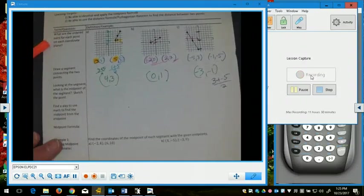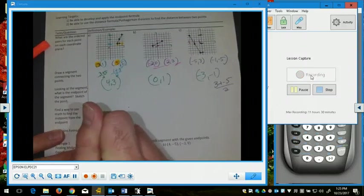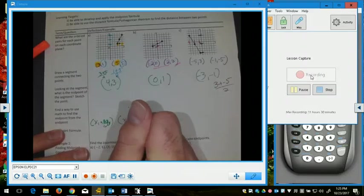So as you may already have figured out, our midpoint formula, when we have two ordered pairs, x sub 1, y sub 1, and x sub 2, y sub 2,